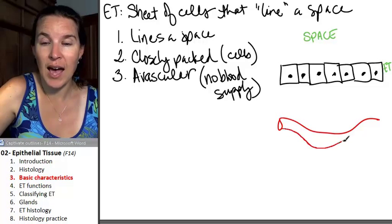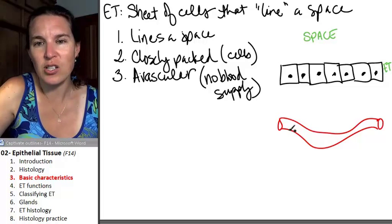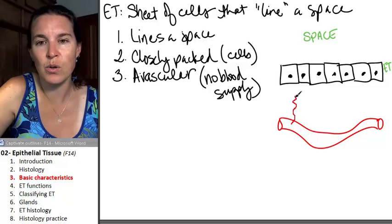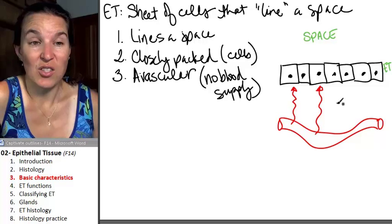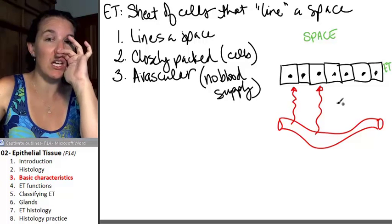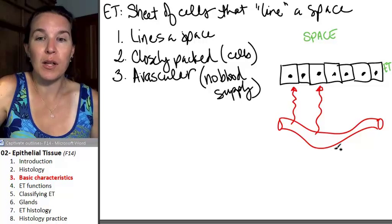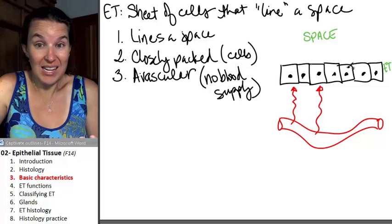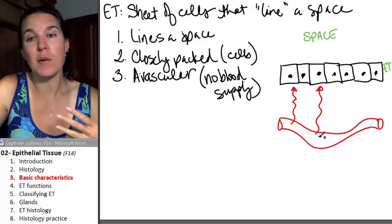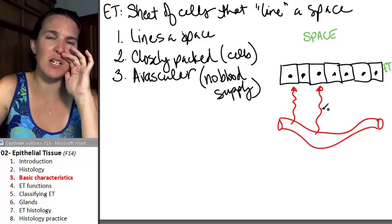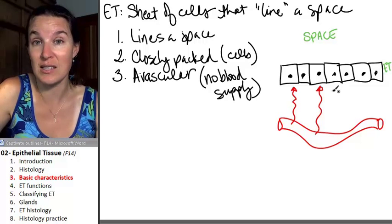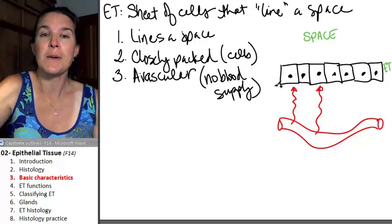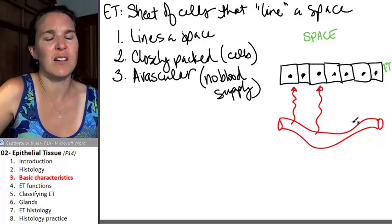And look, how do the nutrients from the blood actually get to the epithelial tissue cells? They have to diffuse in. So the cells are like, we're starving, send us some food. And the blood supply is not embedded in these cells. The blood supply says, okay, I'm sending it over. And diffusion happens. And that's how the epithelial tissue gets its nutrients. So that's kind of an interesting characteristic.